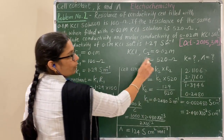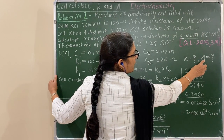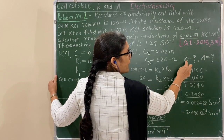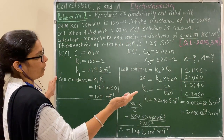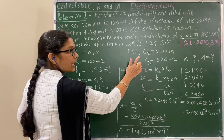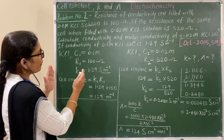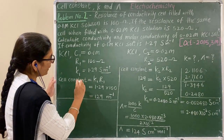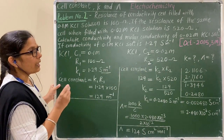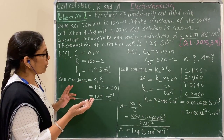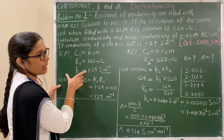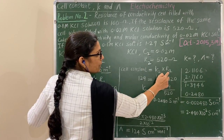Our aim is to determine the molar conductivity. For that, we require conductivity, and for conductivity we require the cell constant. Therefore, first determine the cell constant. Since the same cell is used, the cell constant is equal to conductivity multiplied by resistance. Use that cell constant value for the second solution.